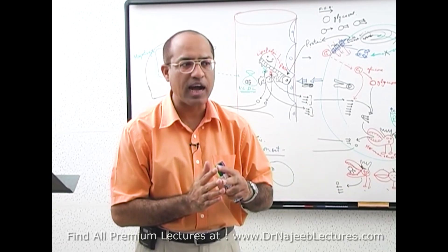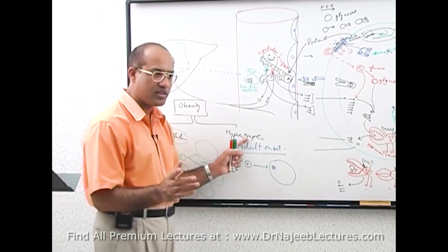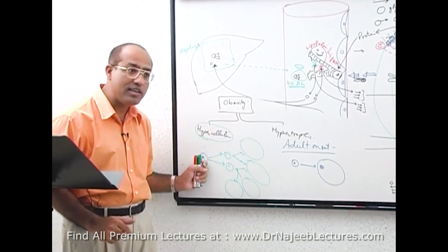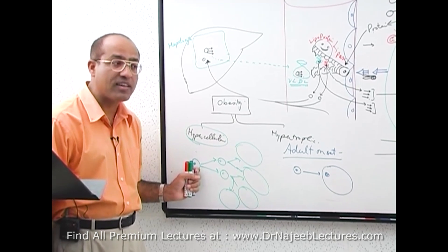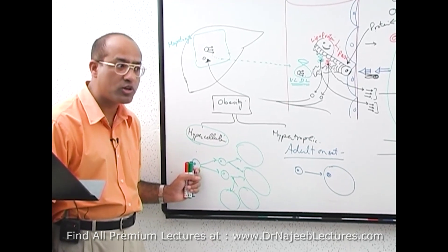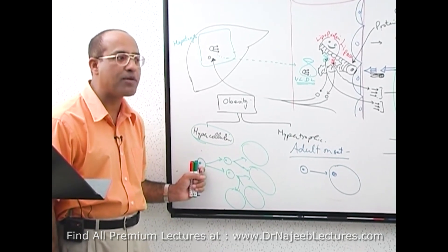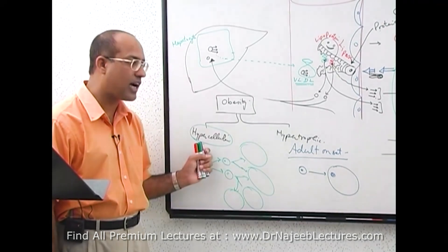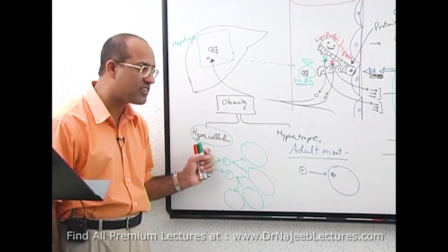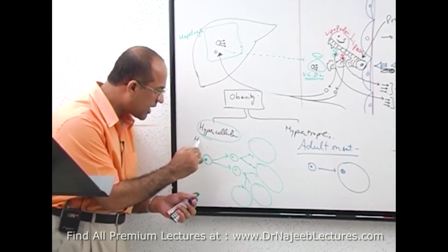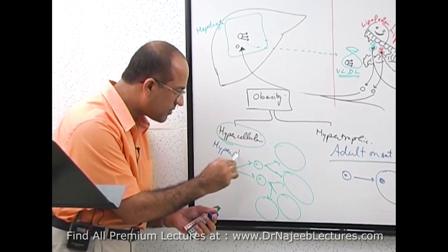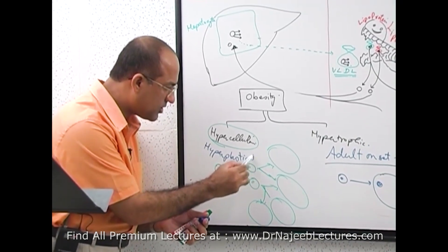Or it may be early age onset obesity in which age fat cells can even multiply when they are overloaded with fat. And we call it hyperplastic or hypercellular obesity. Hyperplasia means increase in number. So it can be called hypercellular obesity or hyperplastic obesity.